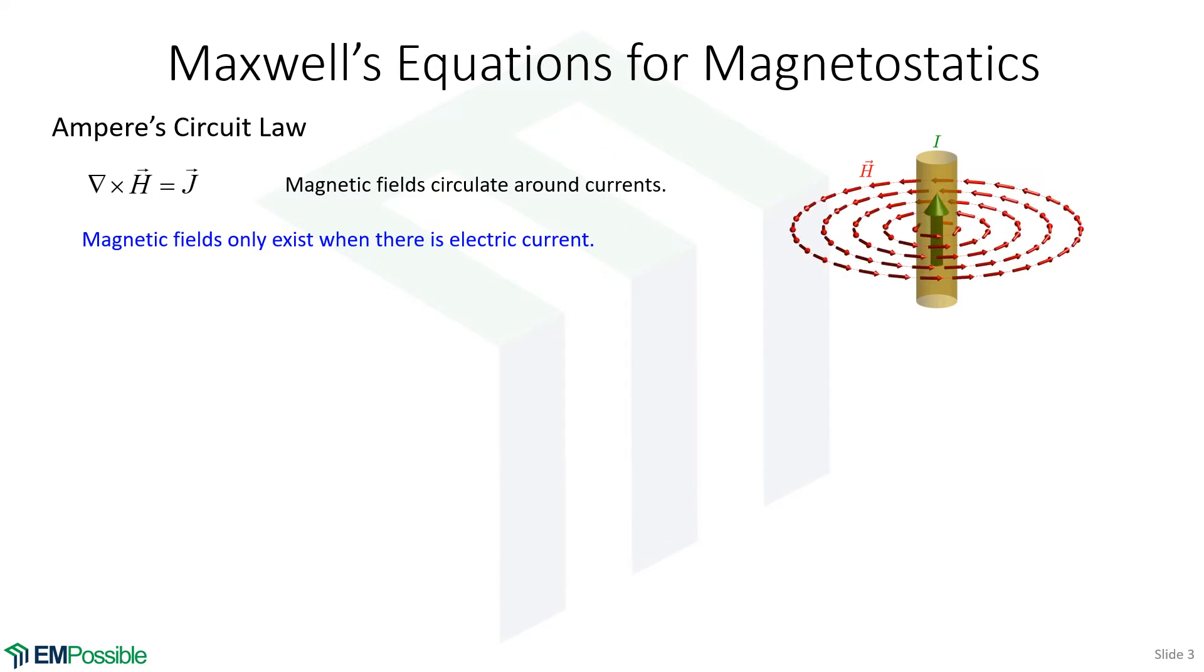So the big conclusion here is that in statics anyway, we only get magnetic fields when there's current, and the magnetic fields will be circulating around those currents.